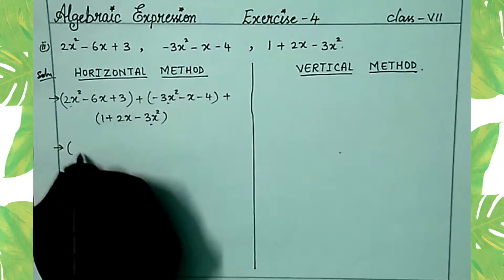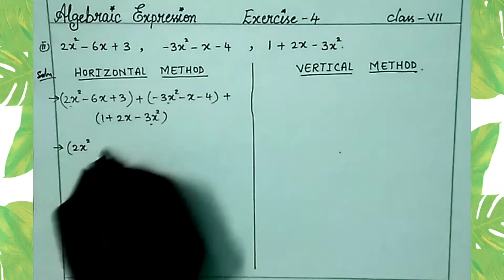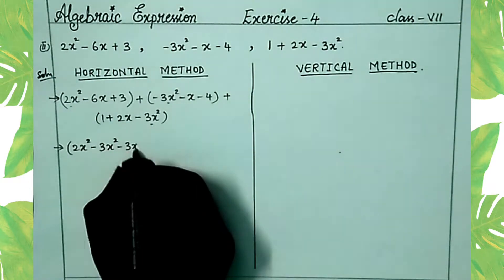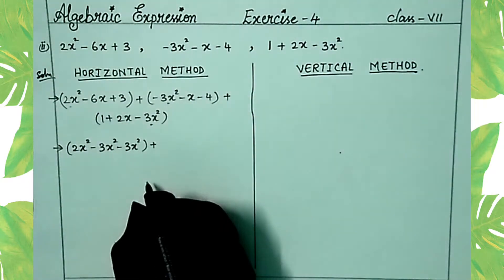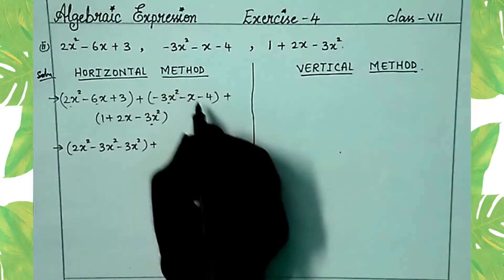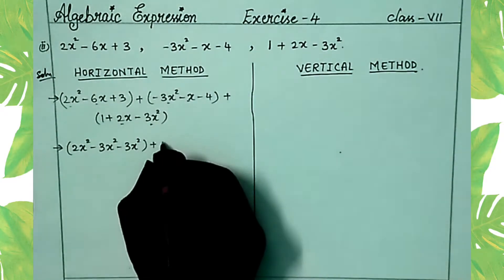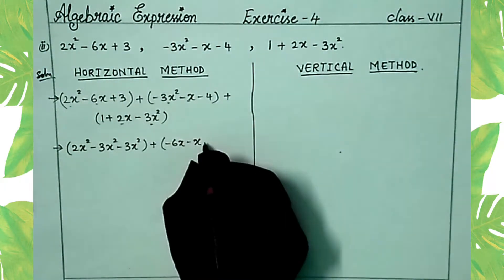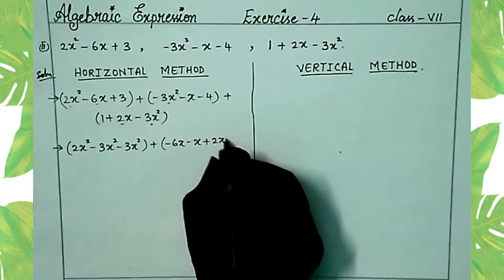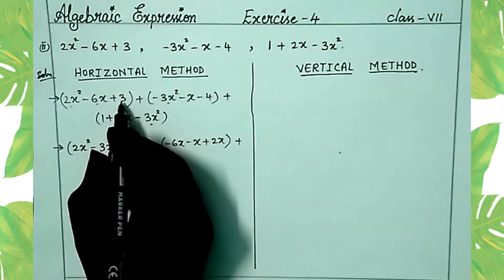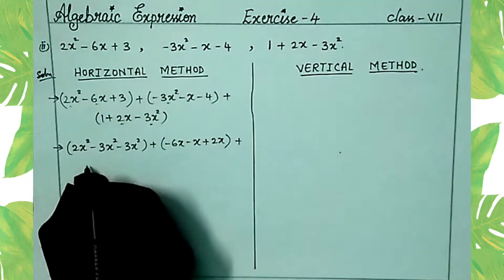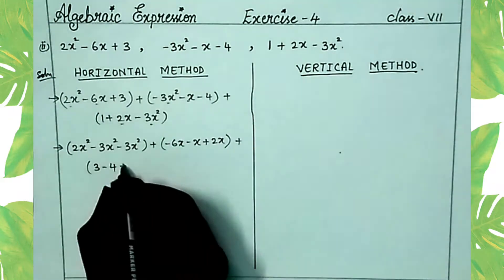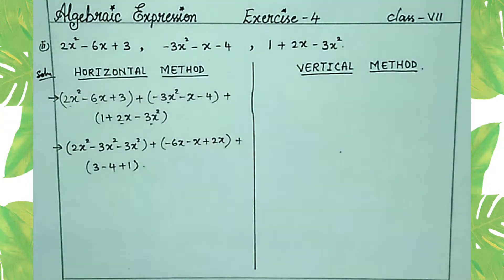2x² minus 3x² minus 3x², plus, next: minus 6x minus x plus 2x — write them together. Next, write the constant terms: plus 3, minus 4, and plus 1 together.